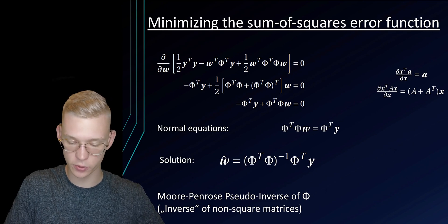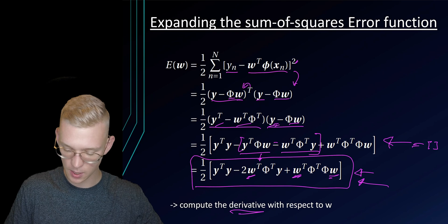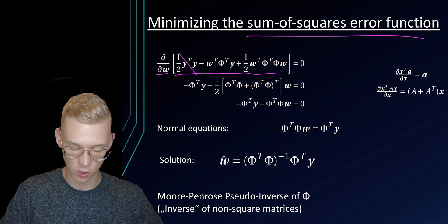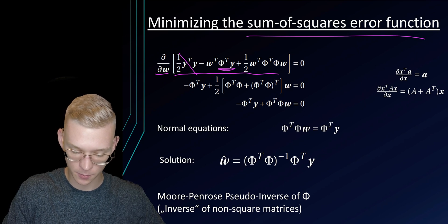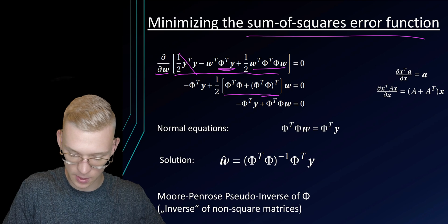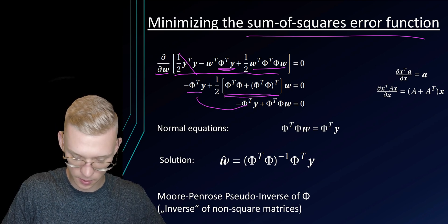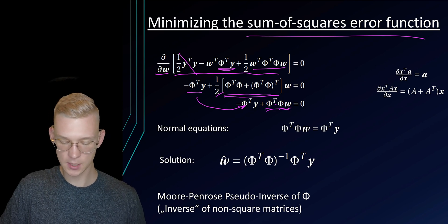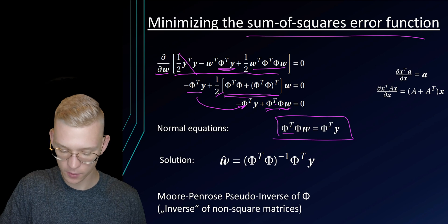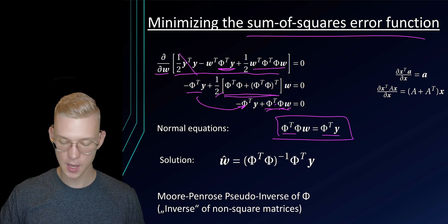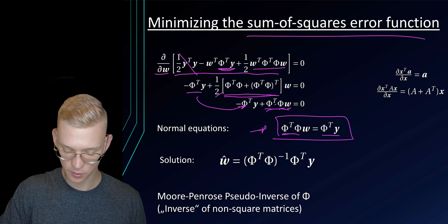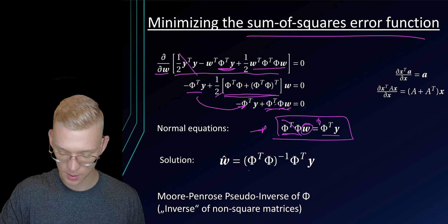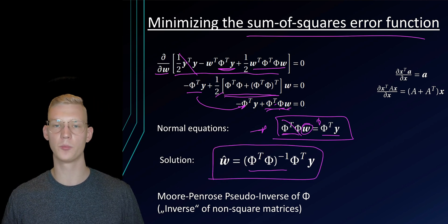So we want to minimize our sum of squares error function by changing our parameters w. So we take a derivative of this function that we had before. Here we have this term left and here because we have a squared term we will get these two values. We will get phi transposed phi w is equal to phi transposed y and this is now our normal equation. We see that we have some matrix here and some vector here. Now we can pre-multiply the inverse from the left and we're left with w. So this is now our optimal solution for our parameters w.